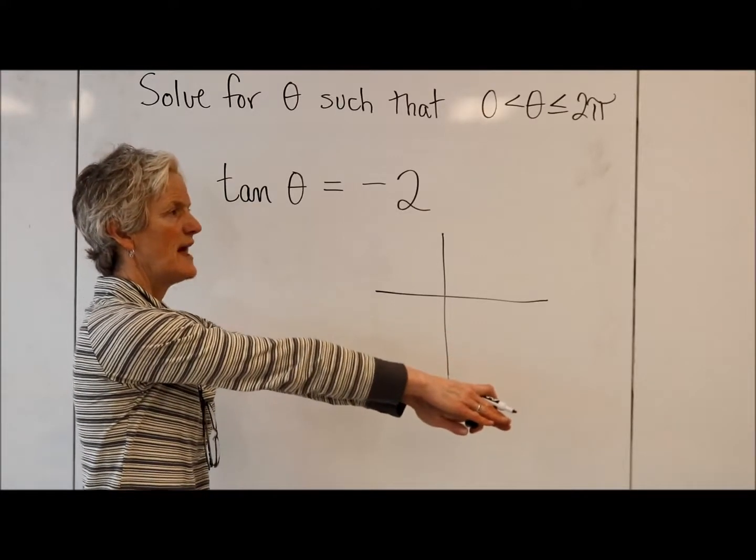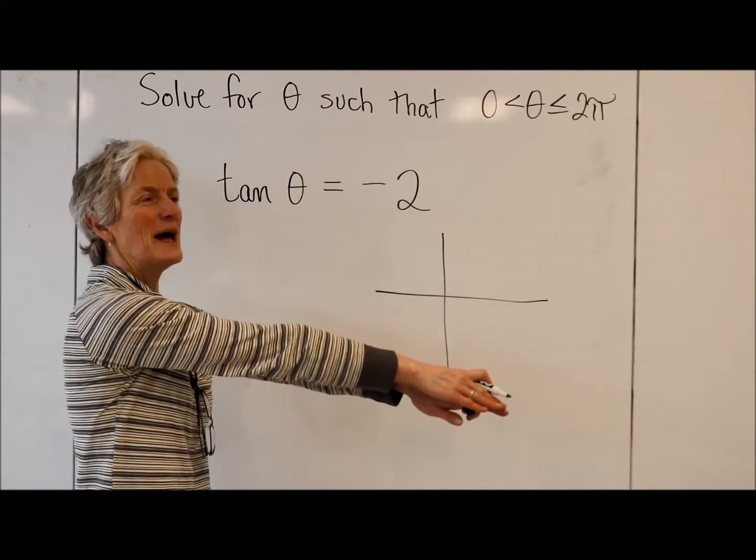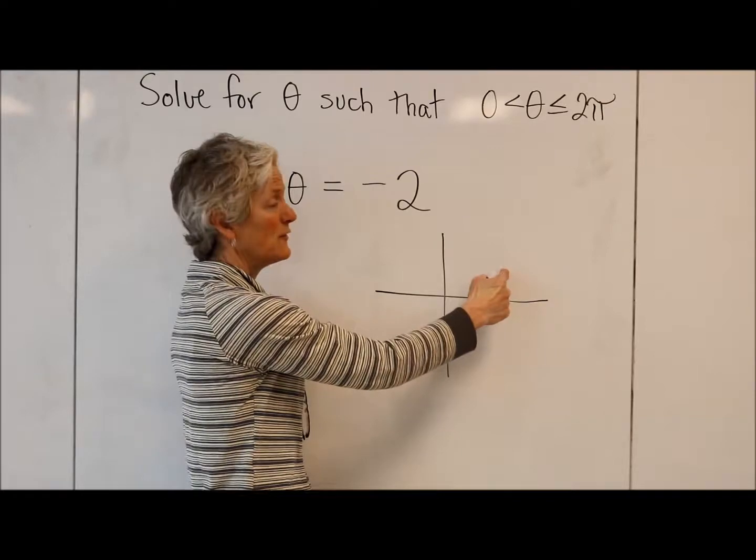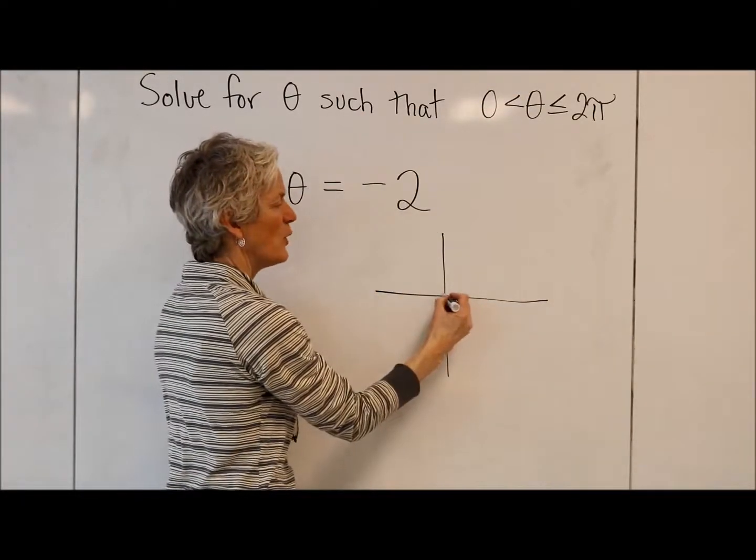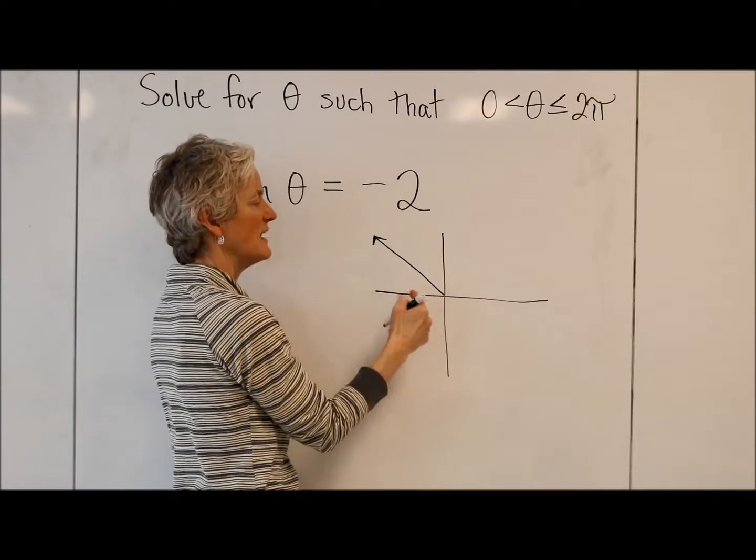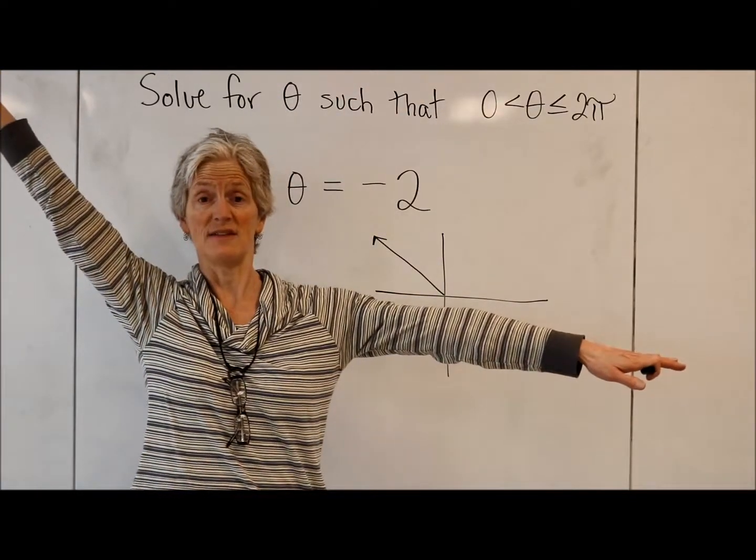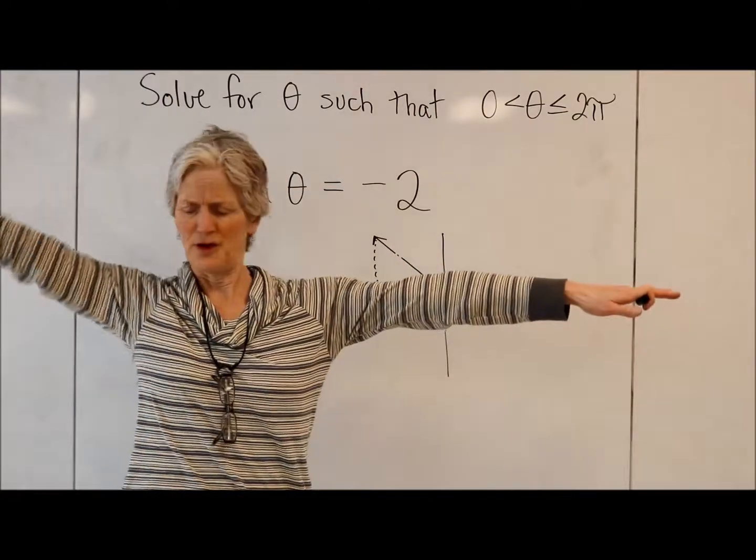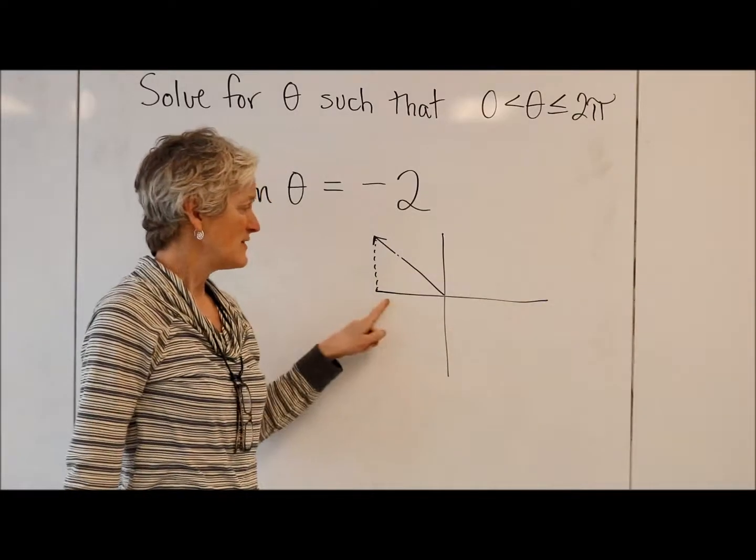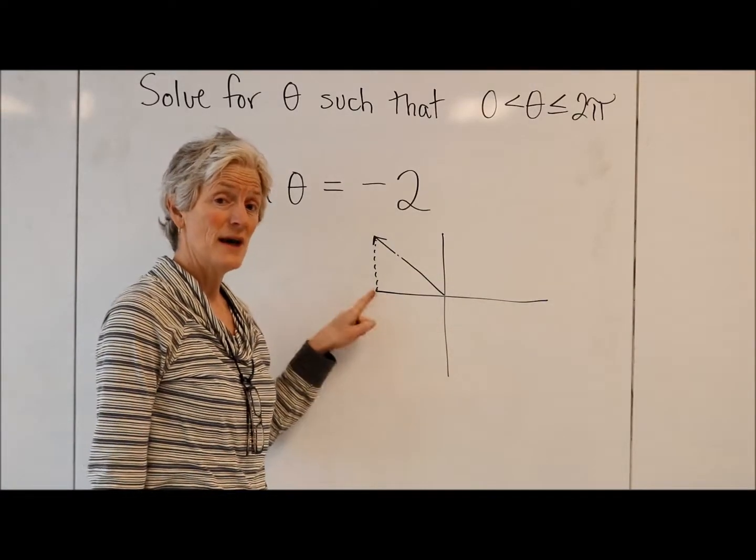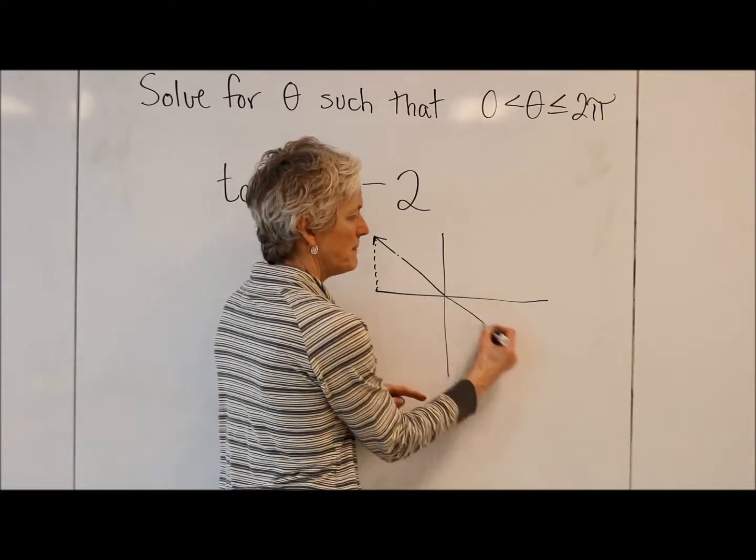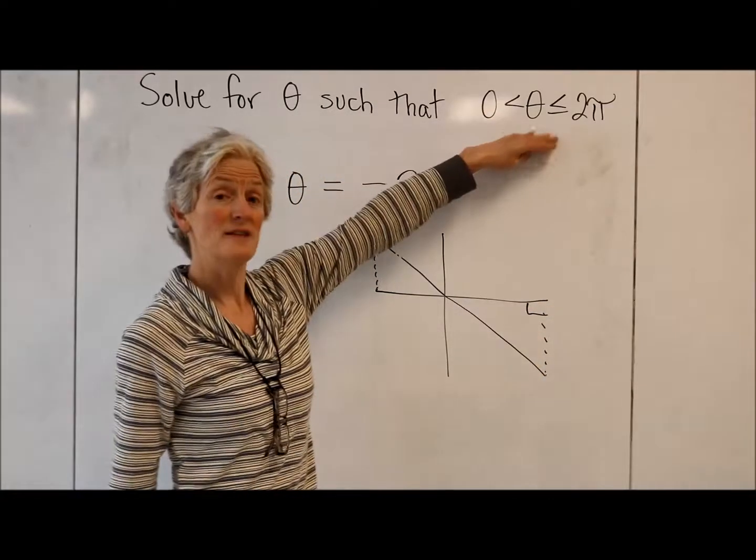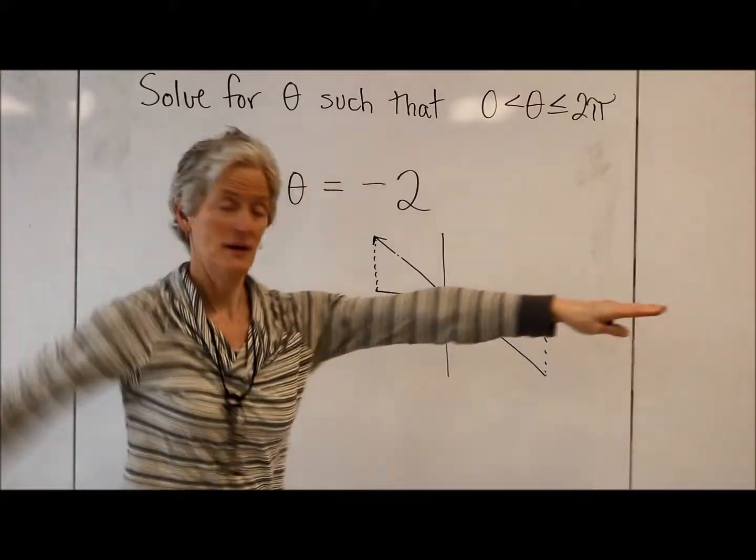Okay, so tan is negative. Tan is negative when y divided by x is negative. So I need my x and my y to be different signs. So it's not going to be in the first quadrant. But the second quadrant where my y is positive and my x is negative, that is one place where tan is going to be negative. So I'm going to make a little reference triangle there. Third quadrant is negative x and negative y. So negative divided by negative, positive. So that's not going to work. But fourth quadrant, my x is positive, my y is negative. So I know my two solutions in this domain are going to be in the second quadrant and the fourth quadrant.